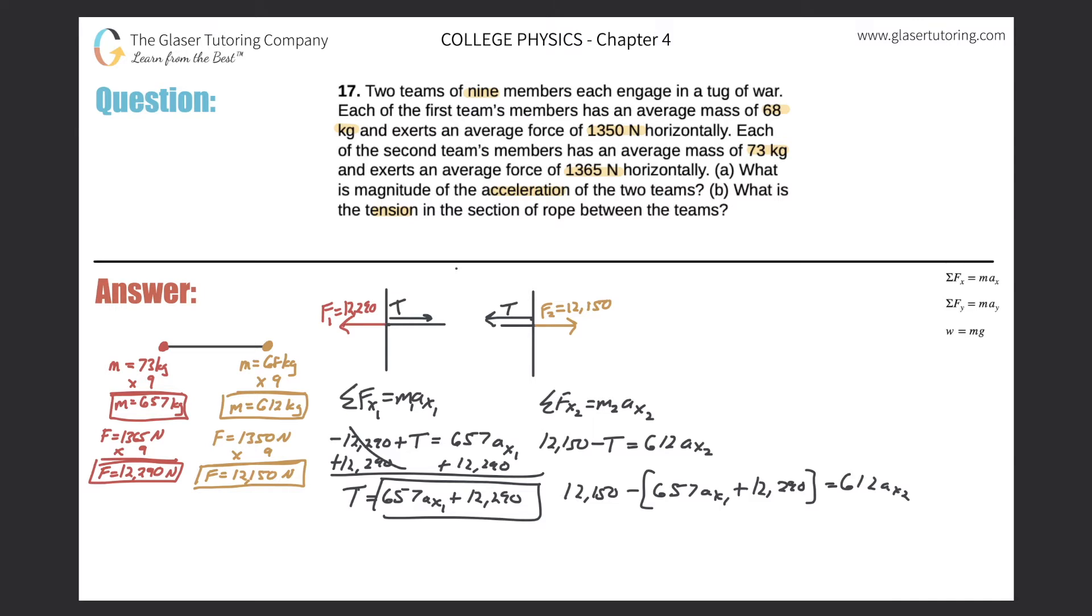Now you might say, well, wait a minute, Andrew, hold on. You said we only have two unknowns in the problem, but wait, I see a tension and tension. They look the same, but then I see a_x1 and a_x2. Are they the same? Are they different? They look different to me. Well, on the page, they look different because one is a_x1 and one is a_x2. But remember, in a tug of war, assuming the rope holds, which we are in this case, the acceleration experienced by team one will be the same as the acceleration experienced by team two. Either the tug of war is going to move to the left, the whole system, or it's going to move to the right, accelerate to the right as a whole system. So I know that they're the same for that reason. So what I'm going to do now when I start cleaning this up, I'm just going to call it a. I can leave it as a_x, but I'm just going to call it a for acceleration.